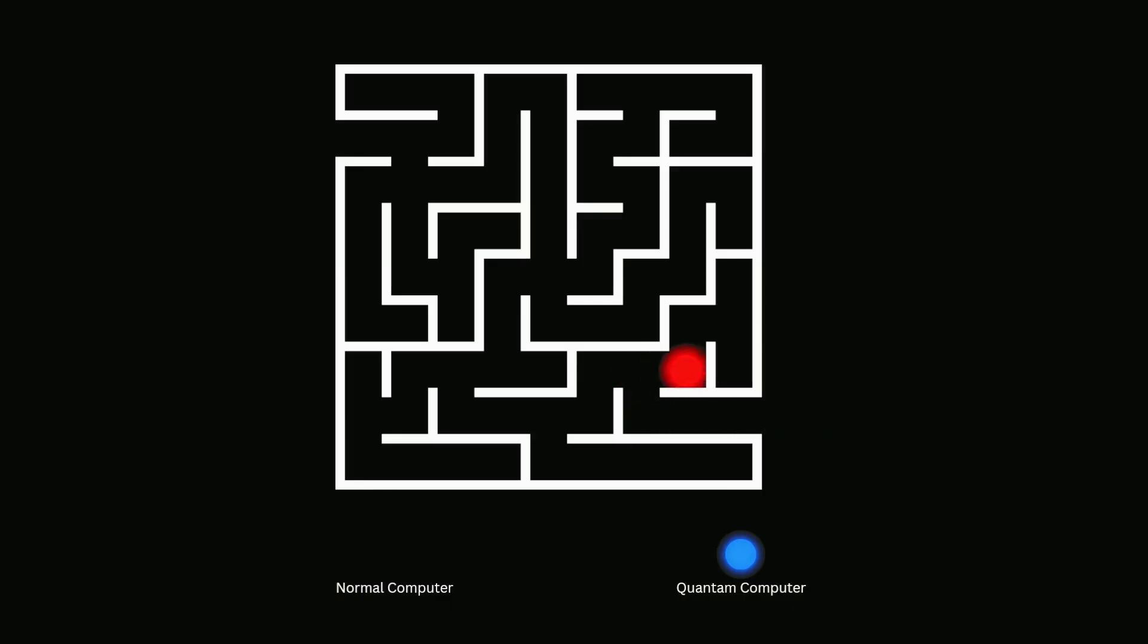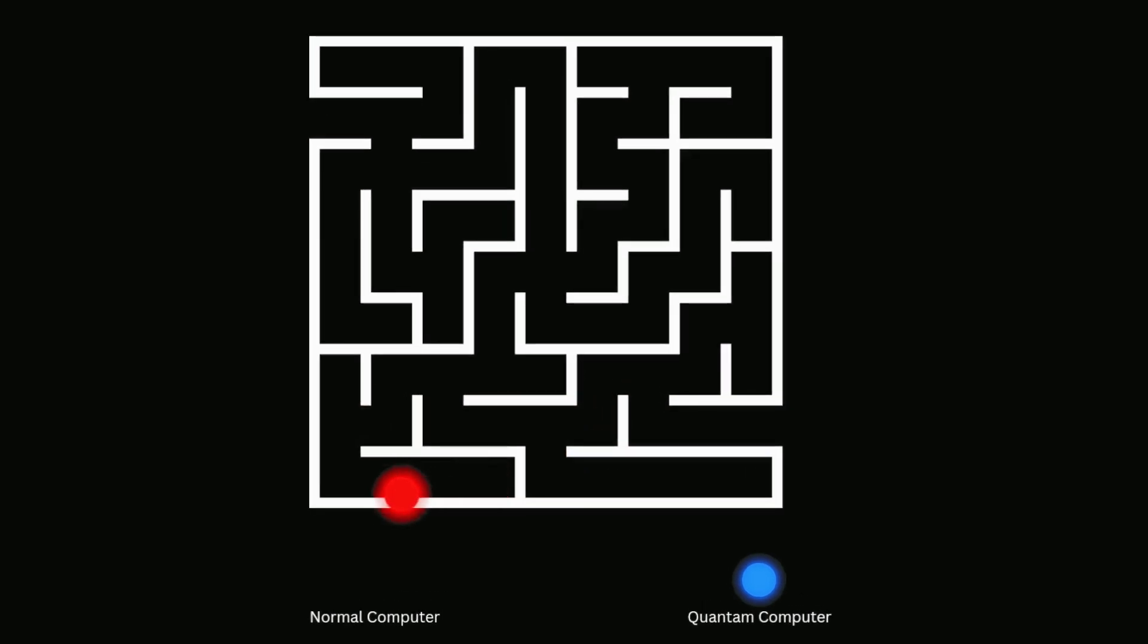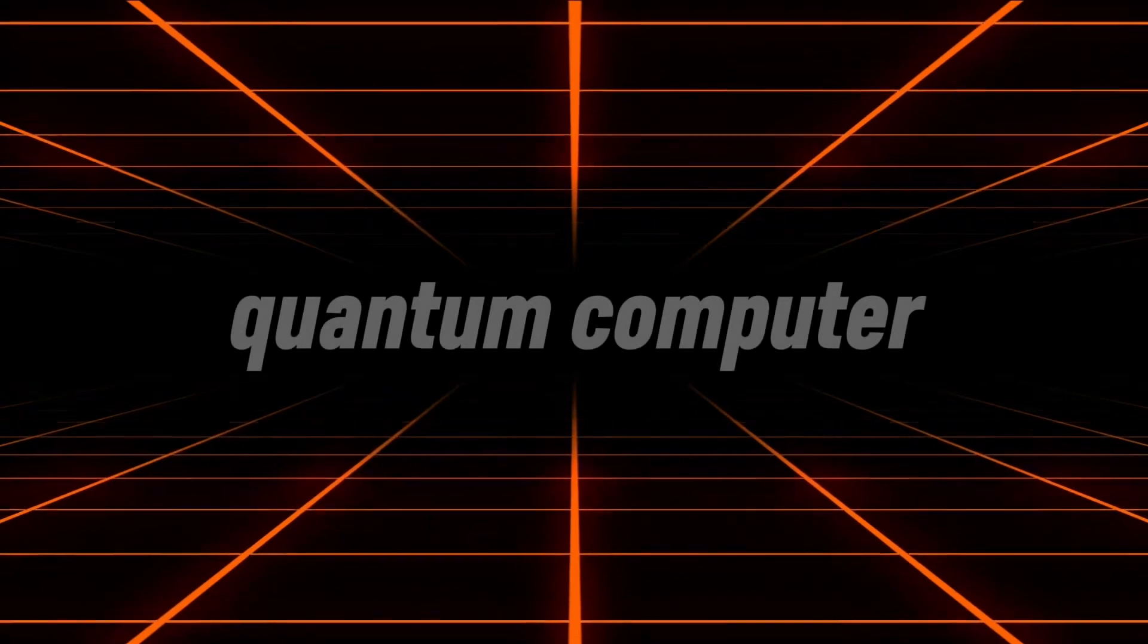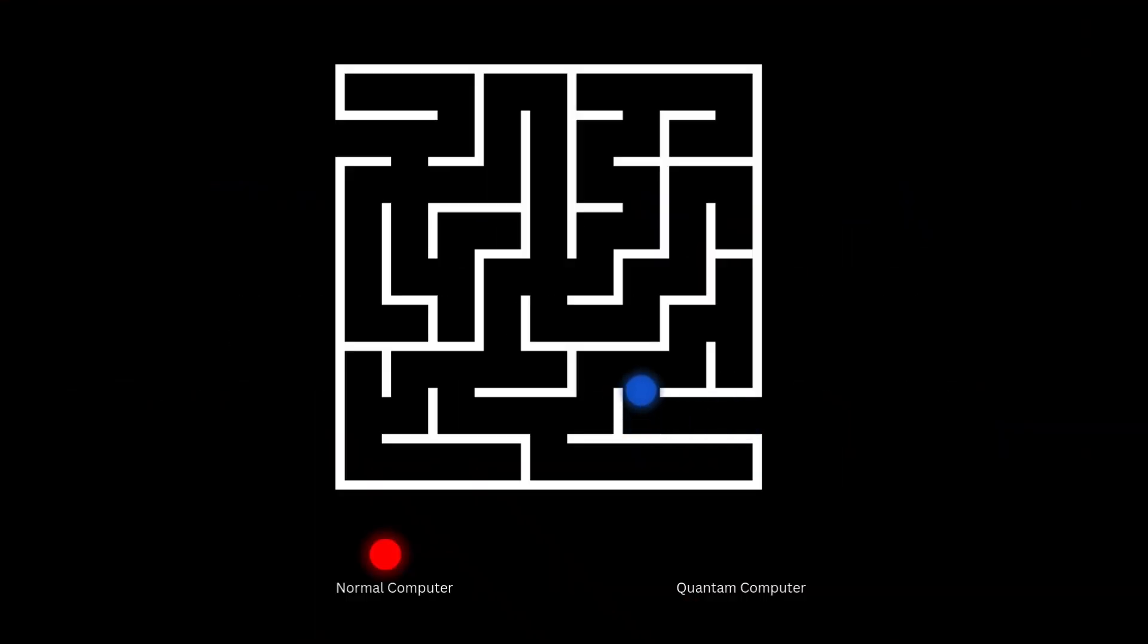A normal computer would take the slow way, testing one path at a time, hitting dead ends and starting over. But a quantum computer, it doesn't test paths one by one. It simulates all possible paths at once and instantly finds the exit.